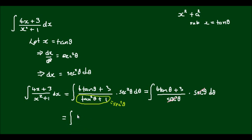So neatening up a bit more, we have the integral of 4 tan theta plus 3 d theta. And now I'm going to write this as two separate integrals, so that's going to be equal to 4 times the integral of tan theta d theta plus 3 times the integral of d theta.